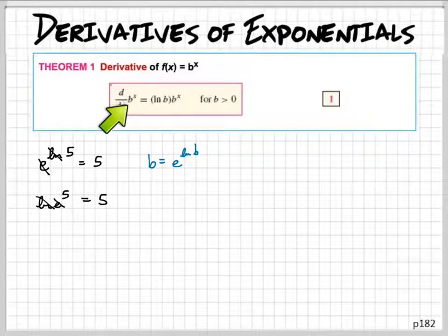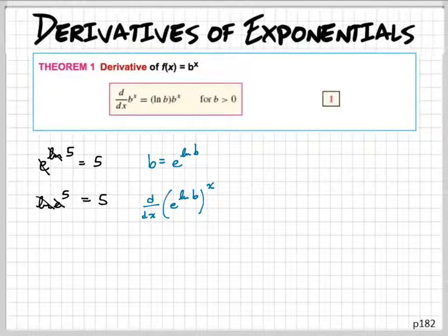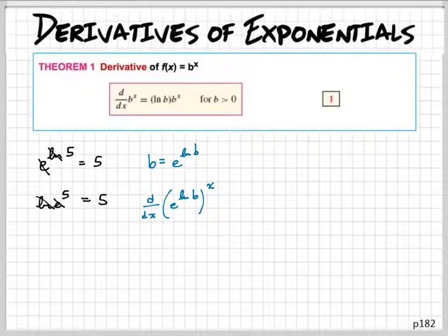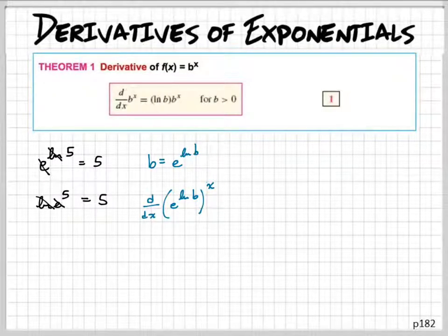So if we're going to take the derivative of b to the x, we're really going to be taking the derivative of e to the natural log of b, and then that is being raised to the x power. This is our b right here — b to the x, that's our b. I'm doing that because base e is the only one where if you take the derivative of e to the x, you just get e to the x. So we want e to the x. We have to take this exponent exponent and multiply it, so that would be e to the natural log of b times x.